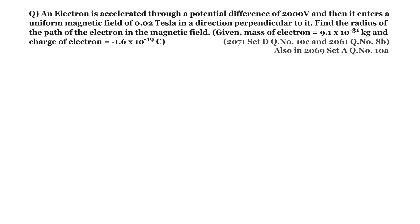An electron is accelerated through a potential difference of 2000 volt and then it enters a uniform magnetic field of 0.02 tesla in a direction perpendicular to it. Find the radius of the path of the electron in the magnetic field. Given mass of electron equals 9.1 into 10 to the power minus 31 kg and charge of electron equals minus 1.6 into 10 to the power minus 19 coulomb.